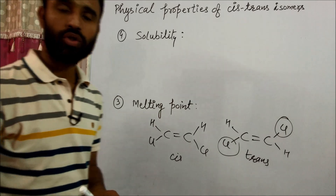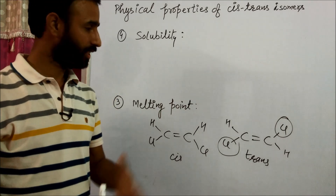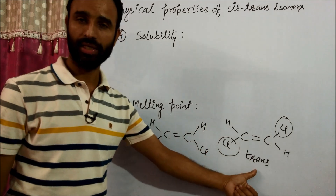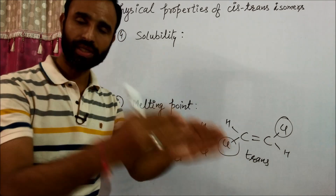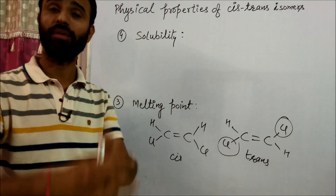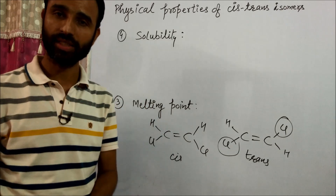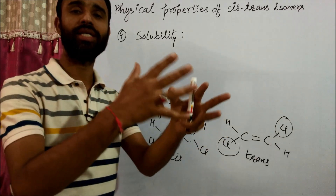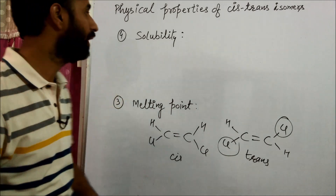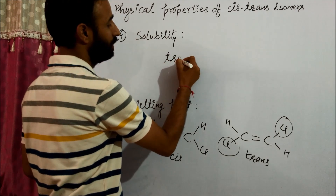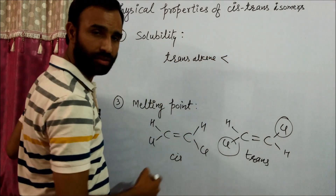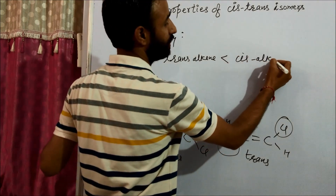The fourth property is solubility. Trans alkene is more symmetrical, fits better in the crystal lattice, and has higher lattice enthalpy. So it is difficult to break the lattice. Higher lattice enthalpy means lower solubility. That is why the solubility of trans alkene is less than that of cis alkene.